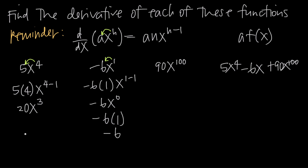If we want to find the derivative of the constant 3, there's no x variable involved. We need to remember that 3 is the same as 3 times x to the 0, because x to the 0 is 1. Applying power rule, we bring the 0 down in front and get 3 times 0 times x to the 0 minus 1. Since 3 times 0 is 0, and 0 times anything is 0, the answer is 0. So the derivative of a constant is always 0, just as the derivative of a constant coefficient times x is just that constant coefficient.